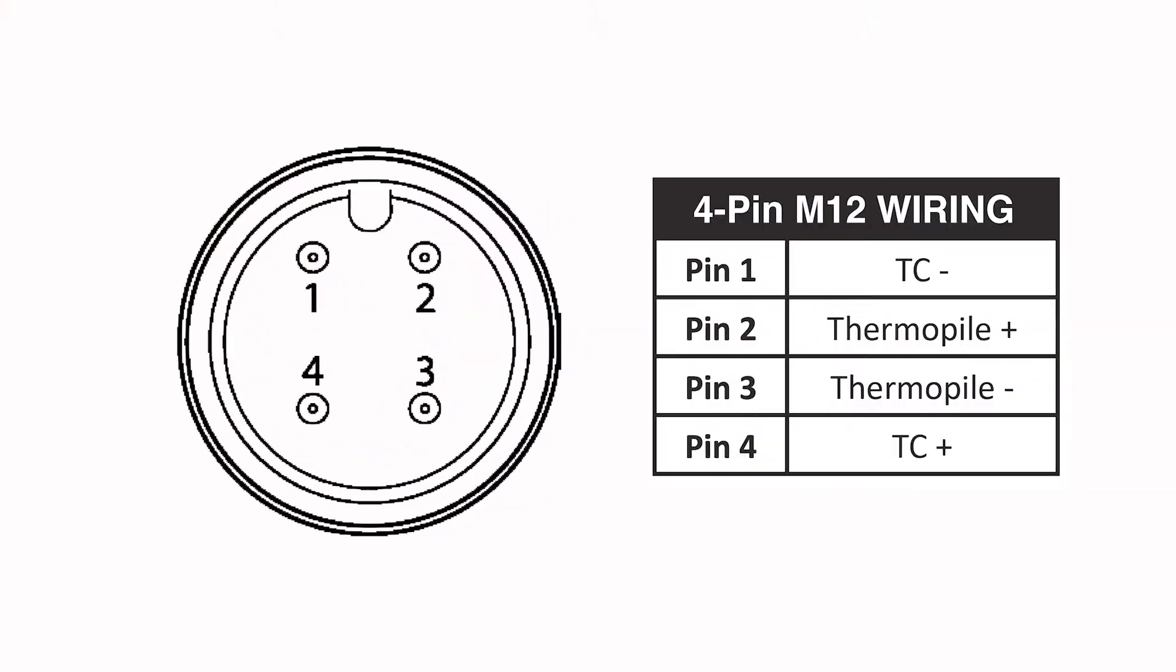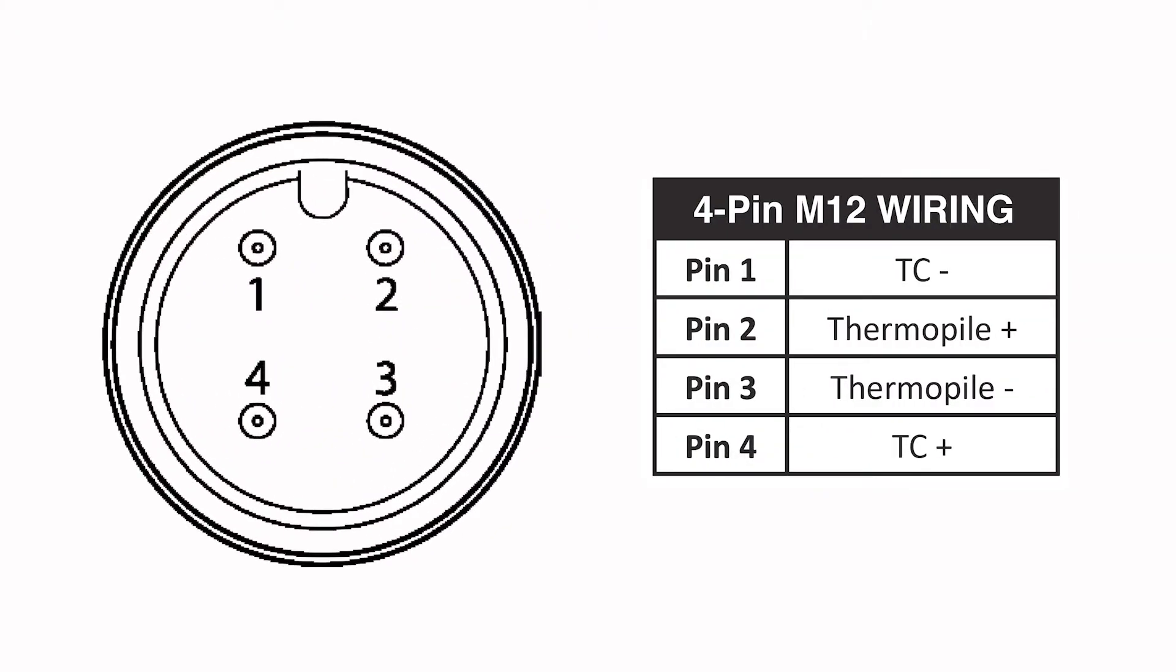So pin 1 goes to the negative thermocouple output, pin 2 is the positive thermopile output, pin 3 is the negative thermopile output, and pin 4 goes to the positive thermocouple output.